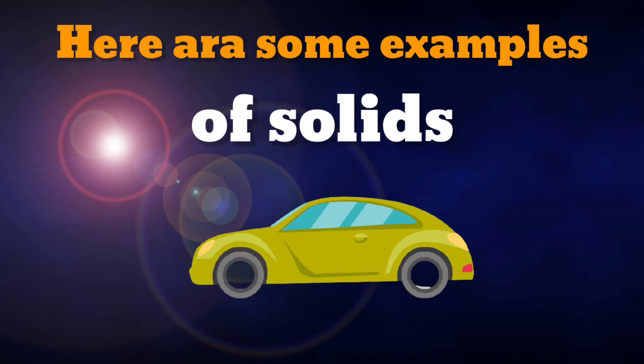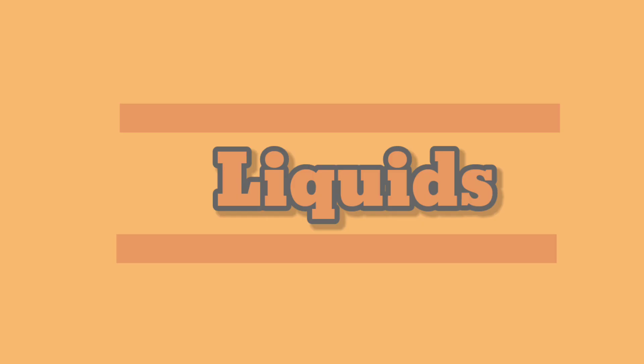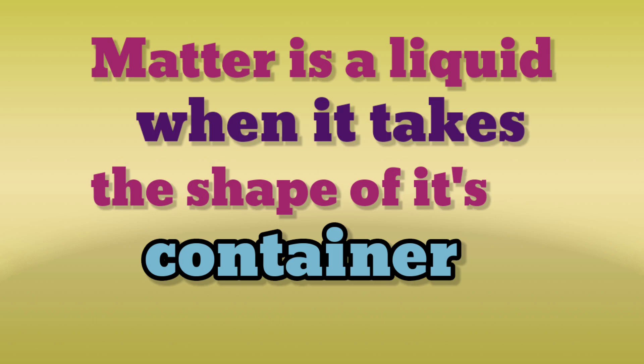Car — car is also a solid because it has its own shape. Now let's learn about liquids. Matter is a liquid when it takes the shape of its container.